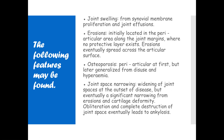Features of rheumatoid arthritis include joint swelling from synovial membrane proliferation and joint effusions; bone erosions initially located in the periarticular area along joint margins where no protective layer exists, eventually spreading across the articular surface; and osteoporosis which starts periarticular then becomes generalized from disuse and hyperemia. Joint space narrowing begins with widening at disease onset but eventually significant narrowing from erosions and cartilage destruction leads to ankylosis.